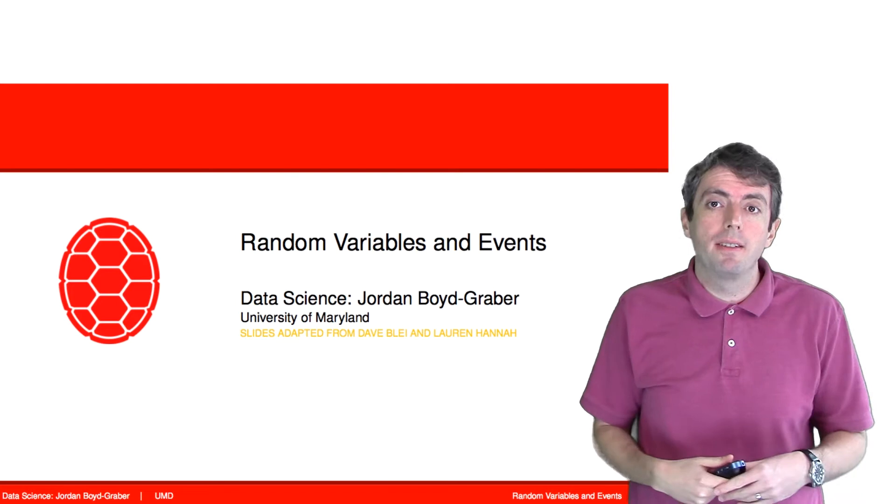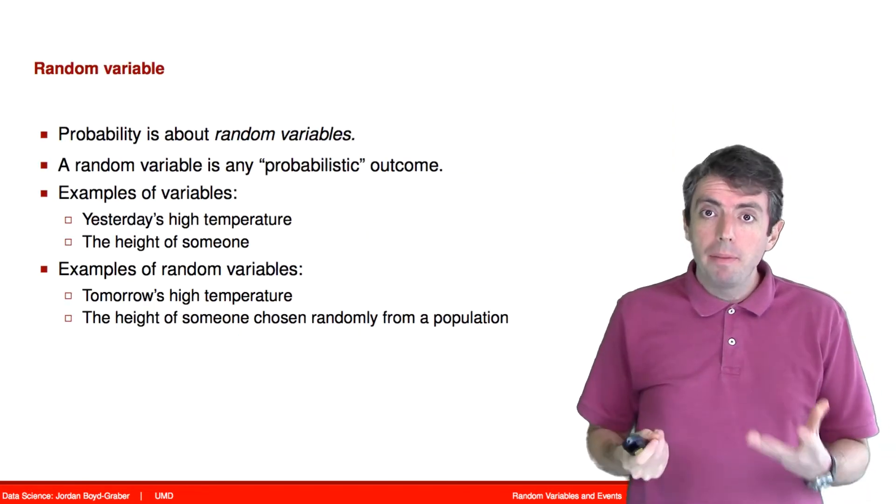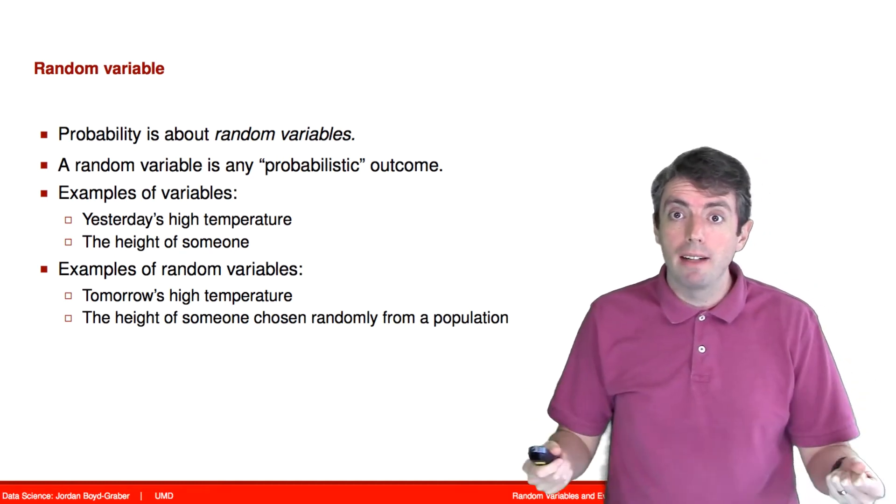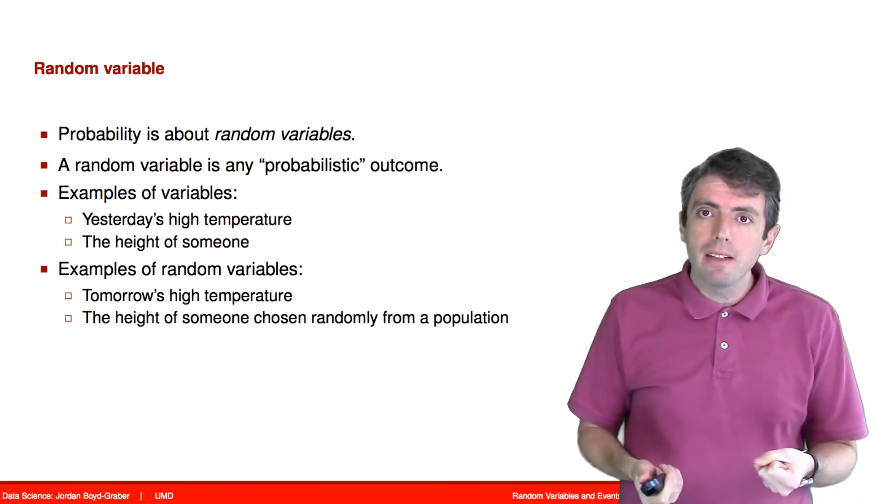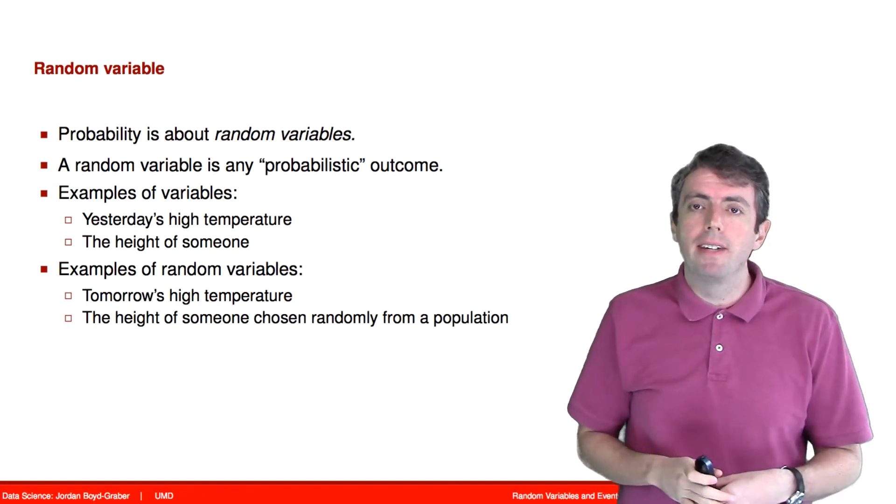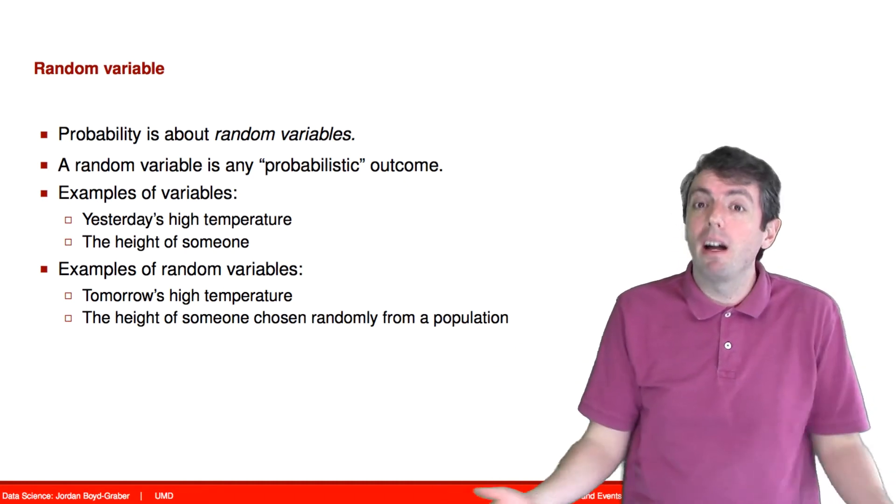So we're going to begin our discussion of probabilities with random variables and events. Probability is a mathematical language for describing random variables. And a random variable is just an outcome of some probabilistic event. Now many things in the world we don't think of as probabilistic events, but they really are.